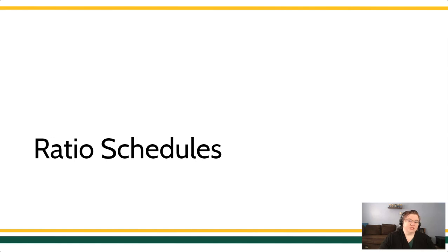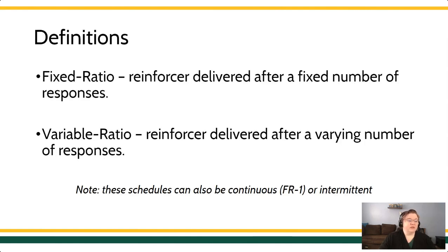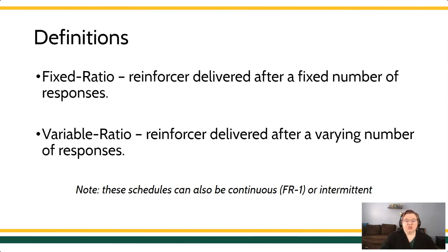When we talk about ratio schedules, typically we're talking about one of two categories: either a fixed ratio schedule, where the reinforcer is delivered after a fixed number of responses — that number is the same every time — or a variable ratio schedule, where the number of responses required to earn the reinforcer can be different from trial to trial. Sometimes it might be two, other times it might be eight, but on average the number will be around whatever your VR schedule is.